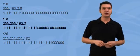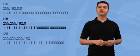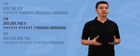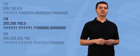Look at the second example, the one with slash 18. Two bits were changed from 0 to 1, so 2 to the power of 2 equals 4, and that's the number of subnets that have been created.